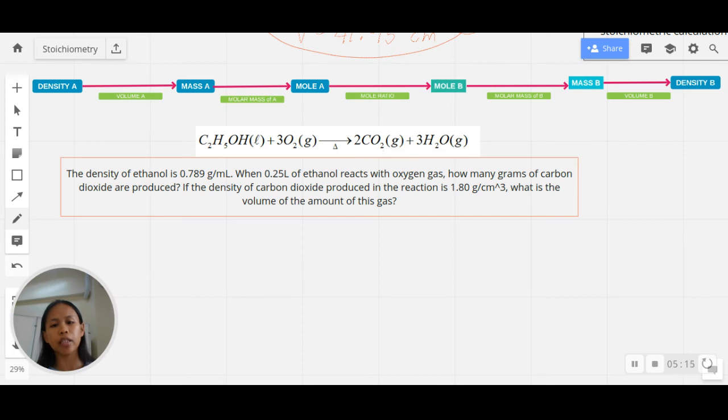Here is the problem: the density of ethanol is 0.789 grams per mL. When 0.25 liter of ethanol reacts with oxygen gas, how many grams of carbon dioxide are produced? And if the density of carbon dioxide produced in the reaction is 1.80 grams per cubic centimeter, what is the volume of the amount of this gas? You have to give me two answers. I want you to follow the roadmap I'm placing on top of the chemical equation, and I would expect your answers to be given in the comments below in this video.